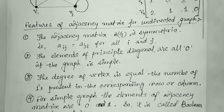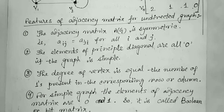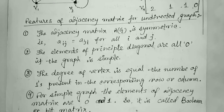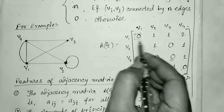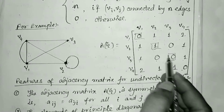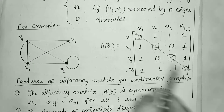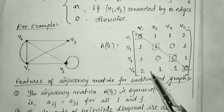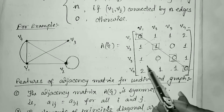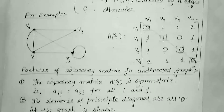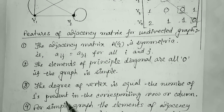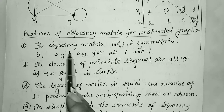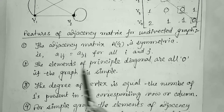From this matrix, we can observe some properties. If we look at the diagonal entries, we find that this is a symmetric matrix. This is one of the features of the adjacency matrix for undirected graphs: the adjacency matrix is always a symmetric matrix.